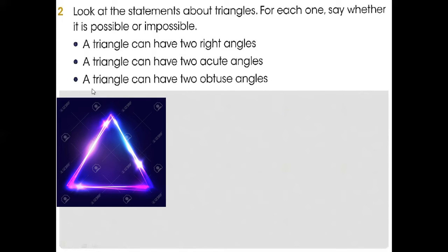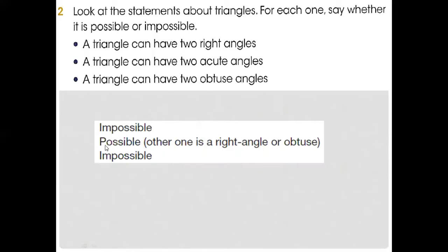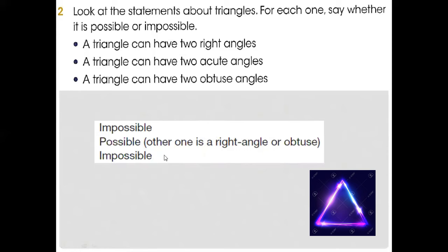A triangle can have two obtuse angles, more than 90. No, one is impossible, but others it's not possible. Now look at here: the first one is impossible, second one is possible, third one is impossible.